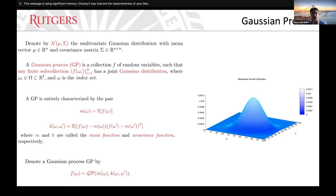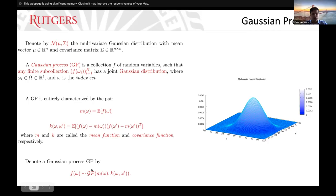The Gaussian process is entirely characterized by the mean — the expected value of these random variables — and the covariance function given by this formula. Let's denote the Gaussian process by this notation.